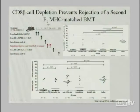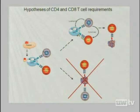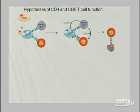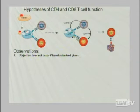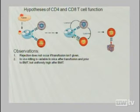After the transplant has occurred, the CD4s are no longer required. These data reject the hypothesis that CD4s are effectors also necessary with the CD8s, and support a model where CD4s are necessary for help early on so that the CD8 response can fully mature. This argues that the transfusion with platelets is a priming event but not pushing to full maturity. The in vivo killing is variable after transfusion and prior to BMT, but uniformly high after the BMT — the bone marrow transplant is itself an immunizing event that causes it to tip over.